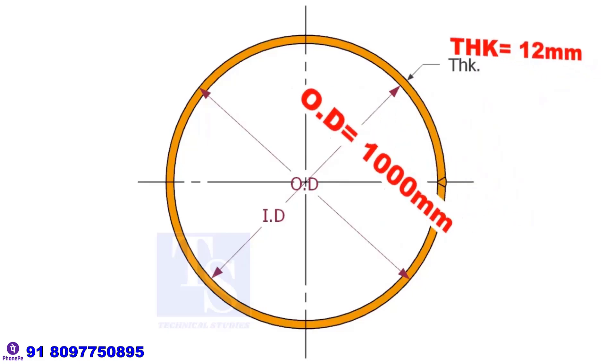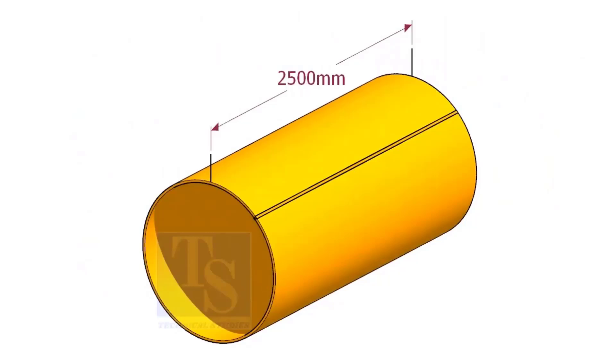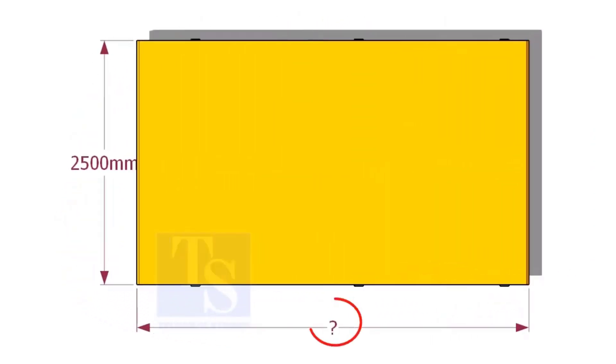Assume that we need a pipe with an inside diameter of 1000 mm and thickness is 12 mm, and the length of the pipe 2500 mm. What will be the length of the plate?